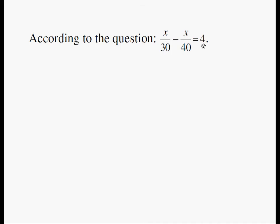All we need to do now is solve this equation. X over 30 minus X over 40 is equal to 4. We are going to use algebra. So this is our equation: X over 30 minus X over 40 is equal to 4.